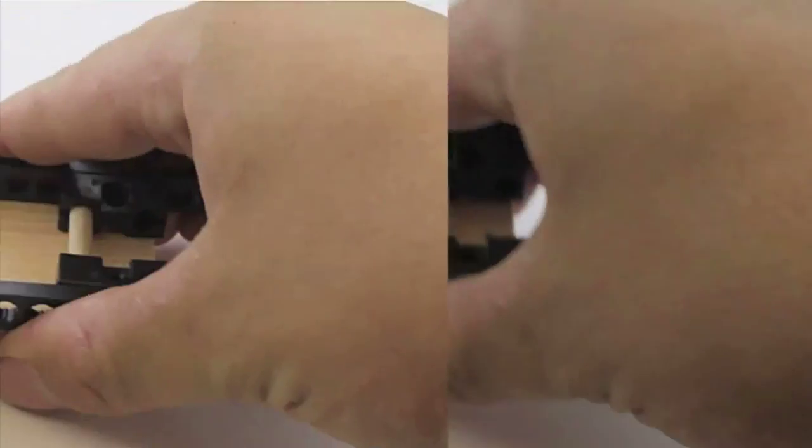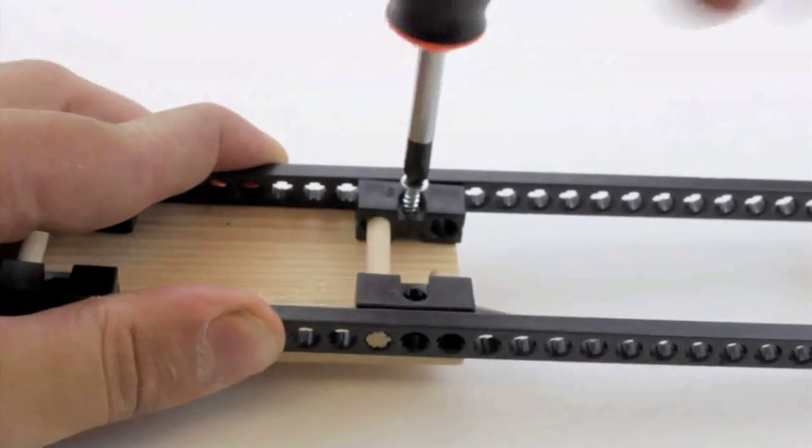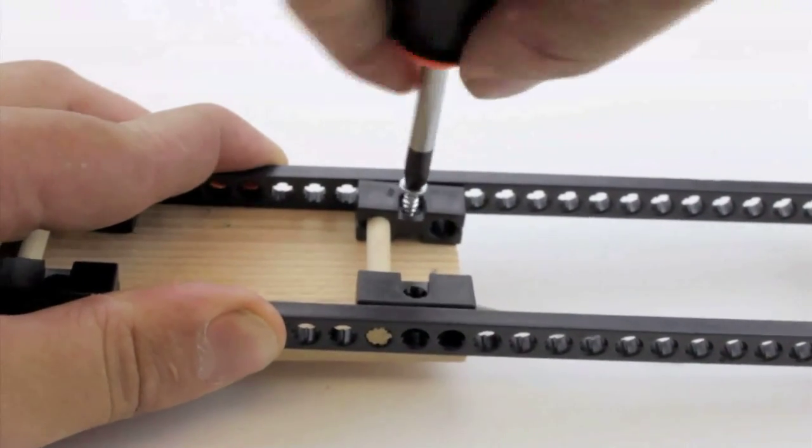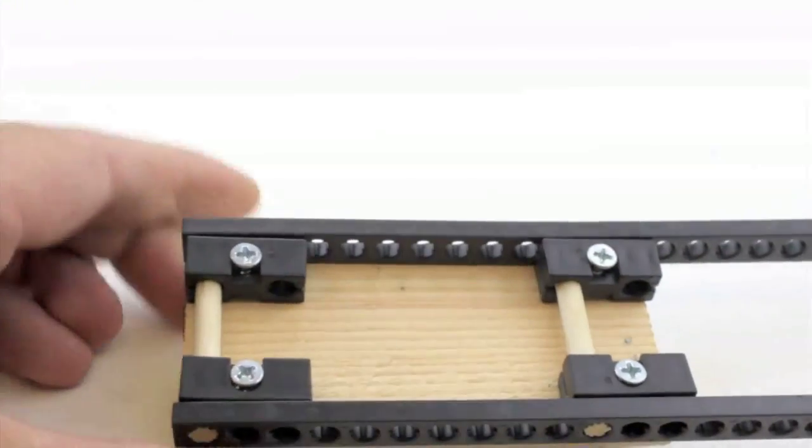Place the mousetrap in the position that you want then flip the assembly over. Using the number 6 screws attach the mousetrap to the frame. Put a little bit of pressure into your screw when you first start screwing so it grabs onto the wood. Attach the mousetrap using all 4 screws.